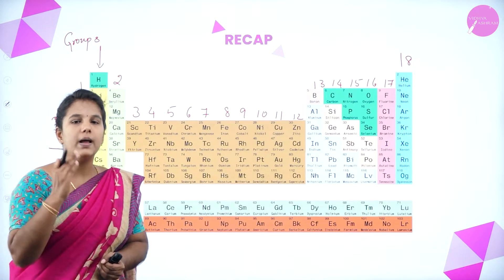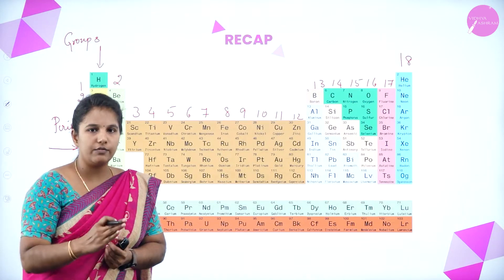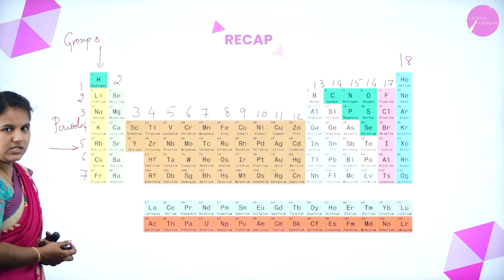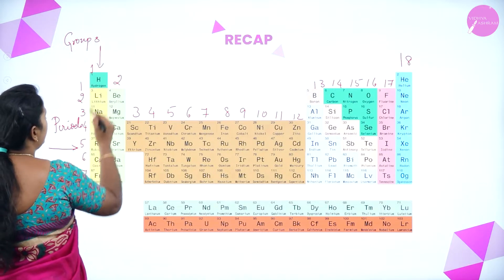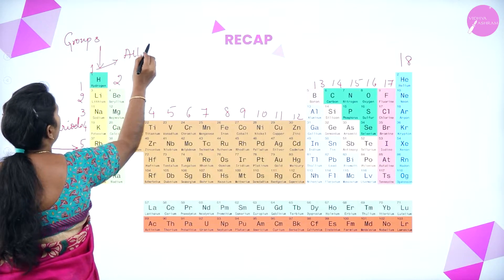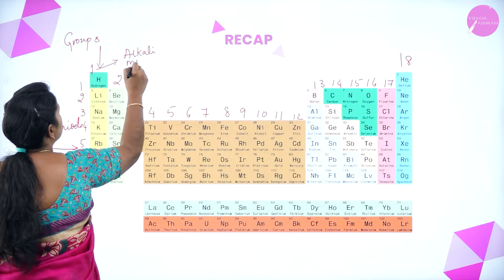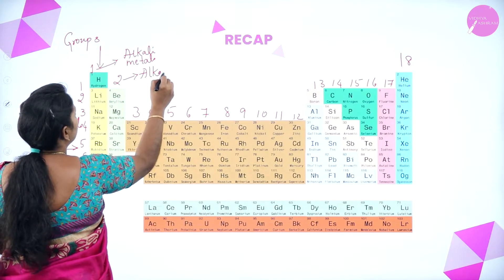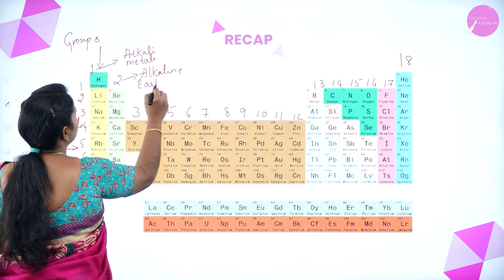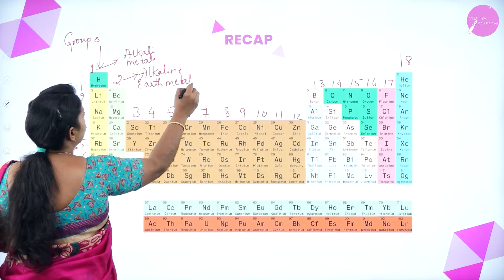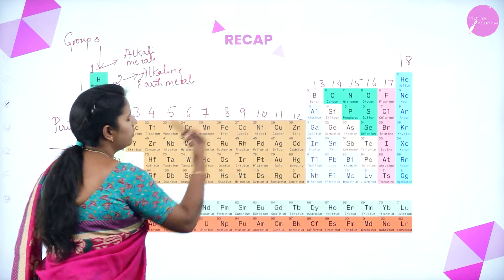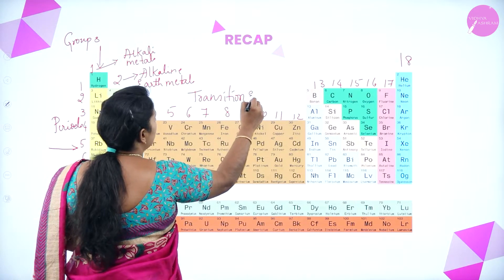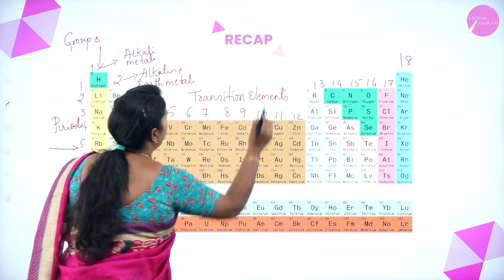Once the groups and periods were established, names were given to each group. The group 1 elements are known as alkali metals. The group 2 elements are known as alkaline earth metals. The group 3 to group 12 elements are known as transition elements or transition metals.